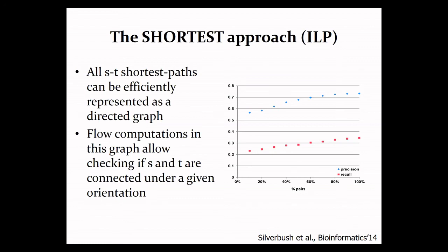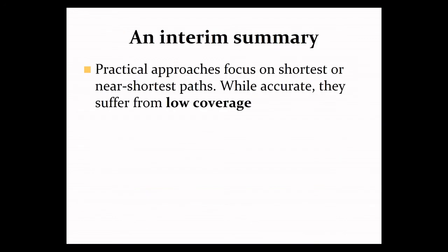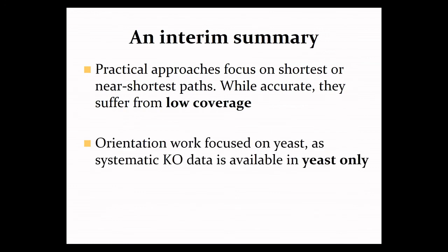So to summarize what I've shown you so far, leading or practical approaches for the network orientation problem tend to focus on shortest or near shortest paths. And while accurate, they suffer from low coverage. Moreover, everything that I described so far was done in yeast, because yeast, as also mentioned by Anastasia yesterday, is the only organism for which we have systematic knockout data. So going forward, if we are to generalize these ideas to human, these are the two challenges that we have to tackle: we have to overcome the low coverage, and we have to find a data source that will replace the knockout data.